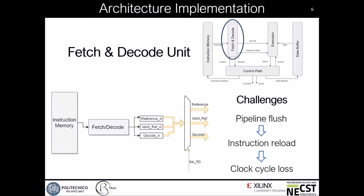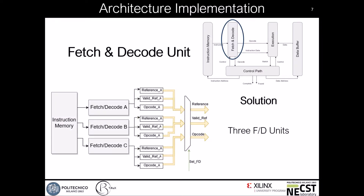We faced a challenge: whenever the execution flow has to be restored and the control path has to reload the right instruction for the following clock cycle, the pipeline should be flushed, thus losing one or more clock cycles. In order to avoid this situation, we have designed three different fetch and decode units to have at disposal the right instruction for each situation, preventing us from blocking the execution.